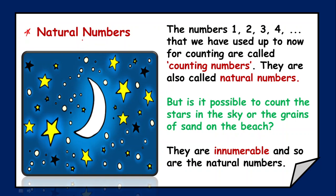In KG, we learned counting from number one — one, two, three, four — and so on. These counting numbers are called natural numbers. But if I tell you to count the stars in the night sky or the grains of sand on a beach, it is not possible. There are innumerable stars and infinite grains of sand. Similarly, natural numbers start from one but go on up to infinity.